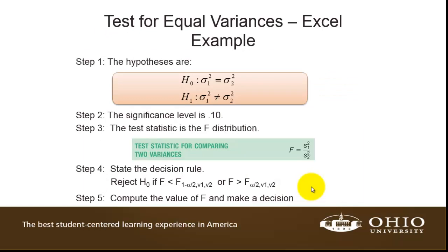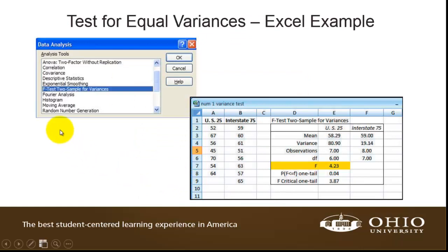Here's the hypothesis test. Note that we have our F statistic. The level of significance is 0.10. The rejection criteria is based on the F distribution. What we would do is go to Data Analysis and select the F-test two sample for variances. This is what the output looks like based on the data in the example. Note that the F statistic is 4.23, and the degrees of freedom are given based on the sample sizes.